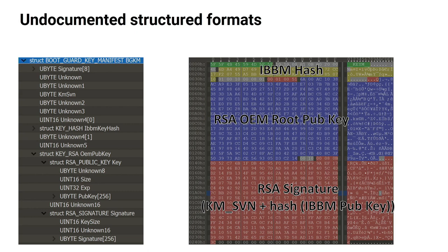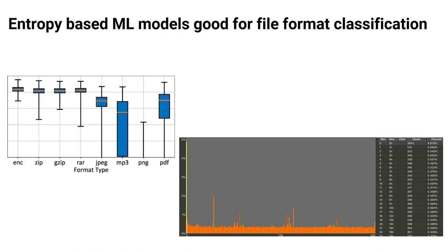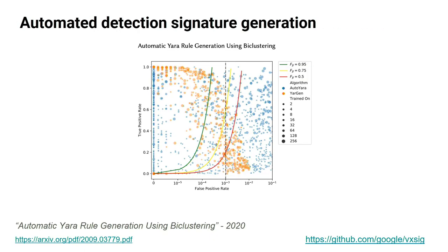We developed tools for detecting hidden file systems, and the same approaches apply to undocumented structured formats. This screenshot is from my 2017 research on WDGuard key manifests. Interestingly, structured format detection can be automated with machine learning: if you understand that a format has a specific structure containing different types of data, you can classify it with entropy-based features. This classification is already happening.